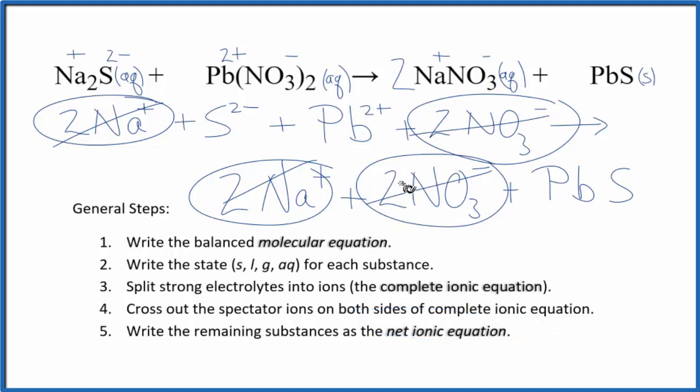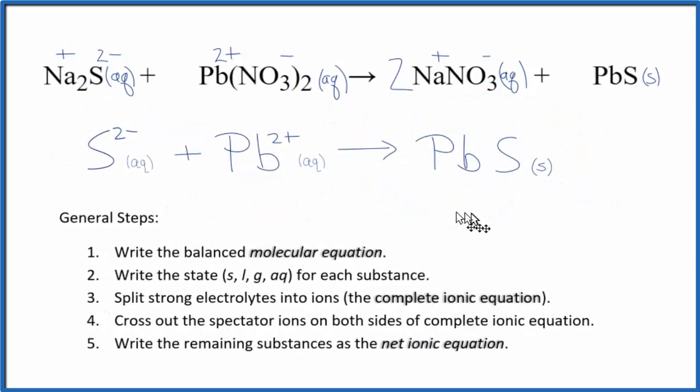I'll clean this up and write the states. We'll have our net ionic equation. So this is the balanced net ionic equation for sodium sulfide plus lead 2 nitrate. You'll note the charge is conserved. We have a 2 minus and a 2 plus. They cancel out, neutral compound, and you have the same number of atoms on each side. So mass is conserved as well.